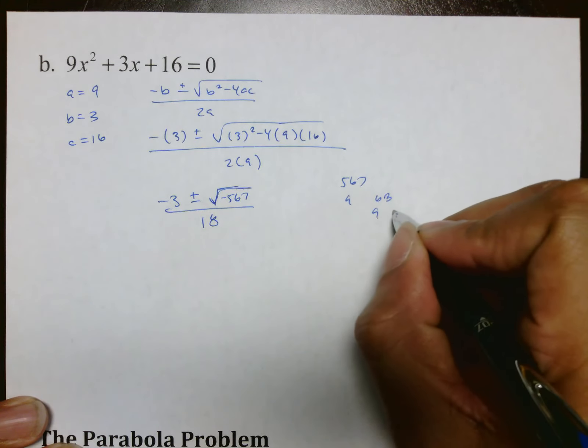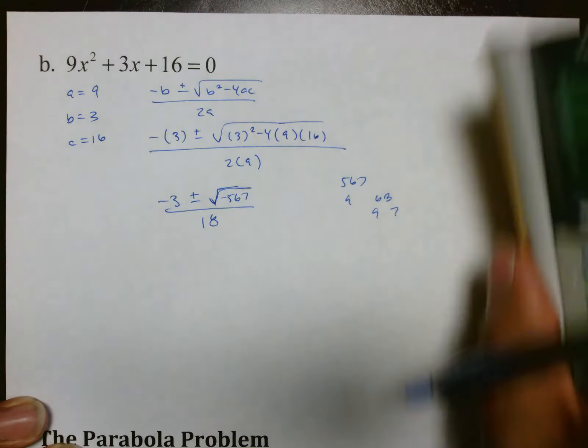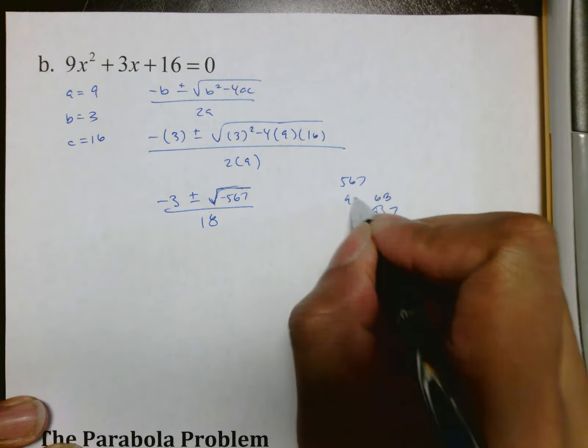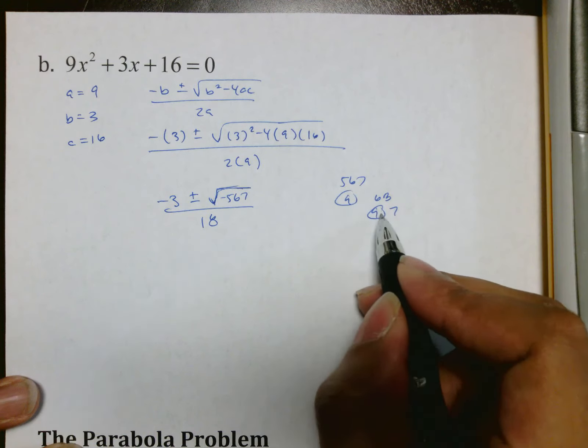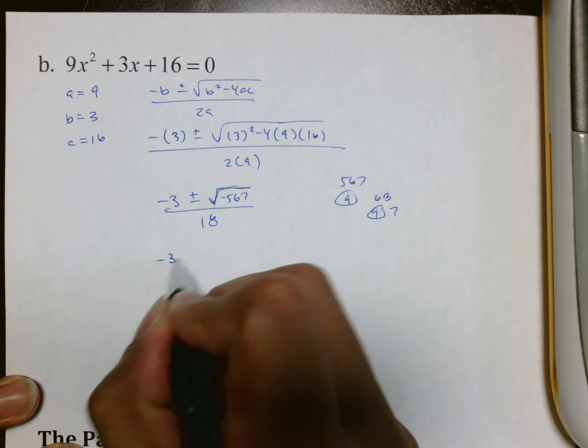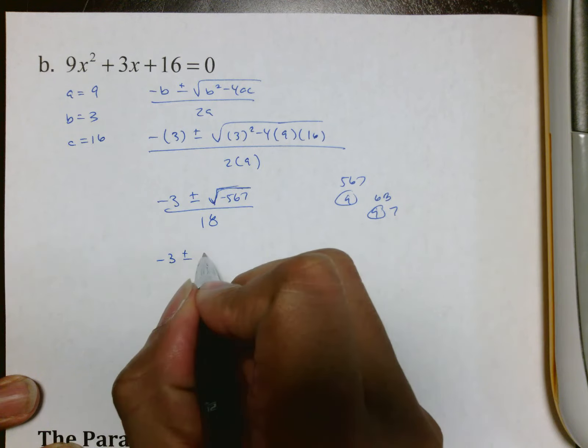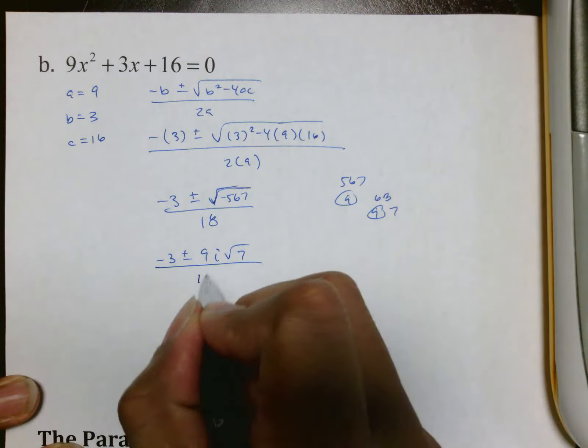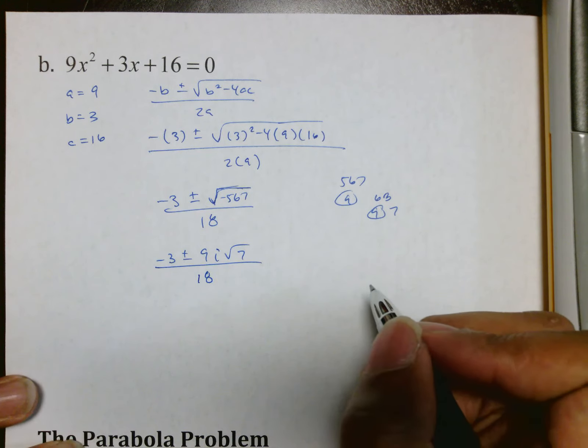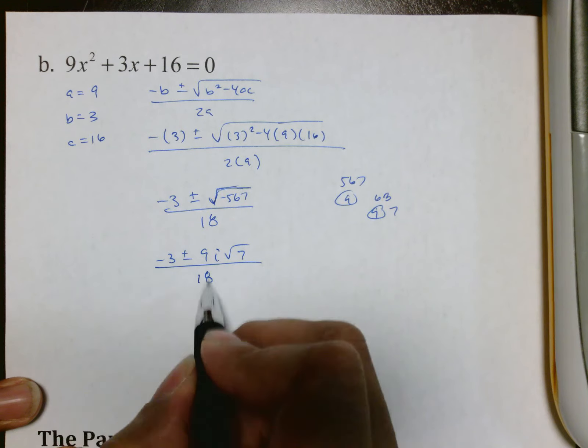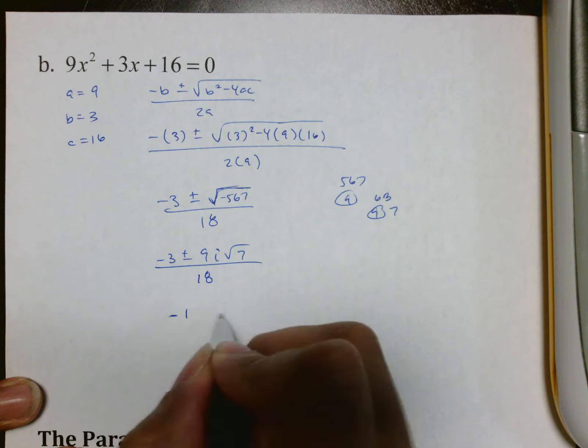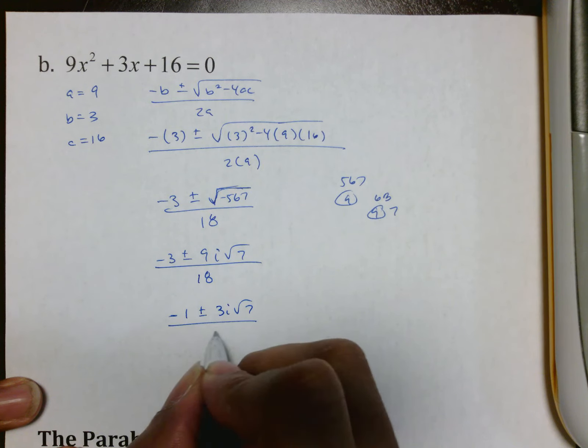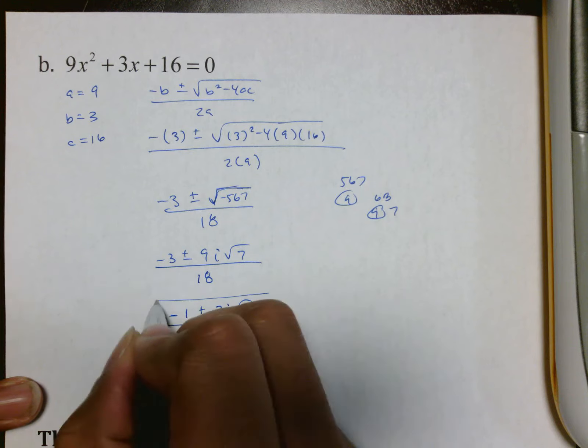And of course, 63 is 9 times 7, so what we're looking at here is 9 times 9, which means that 3 times 3, 3 times 3 makes 9i, again, i because it's negative, root 7 all over 18. And similar to the last one, you can pull a 3 out of all these, so it's negative 1 plus or minus 3i√7 all over 6, I believe, is what it would end up being.